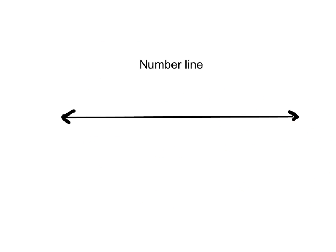Oftentimes, we look at a number line when we are looking at integers. So this here is a number line, and I'm going to go ahead and label it. We'll place 0 on the number line because that is part of our integers. Towards the right of 0 will be our positive integers. So we have 1, 2, 3, 4, and as you see there's an arrow indicating it goes on and on in that direction.